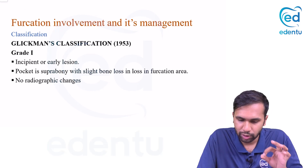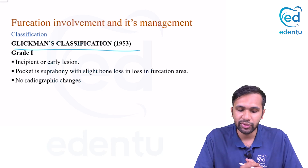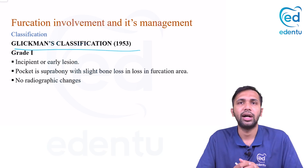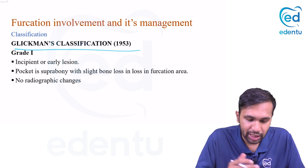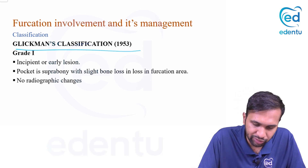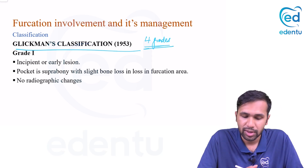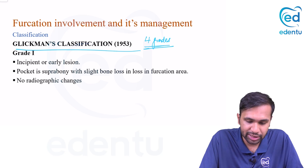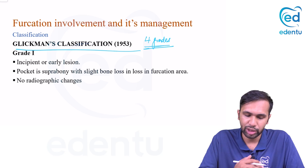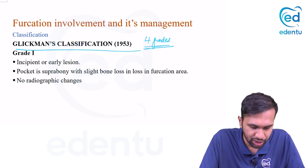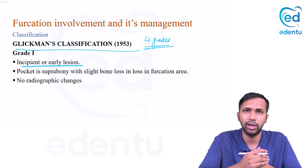The most important question from furcation is Glickman's classification. Glickman, in 1953, put forward a widely accepted classification of furcation involvement, classifying it into four grades based on the extent of bone loss, wherein grade one is the least severe and grade four is the most severe.